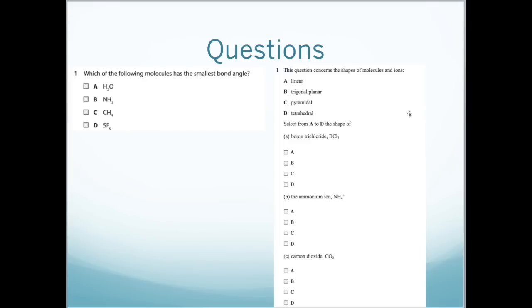For the ammonium ion, because of the four hydrogens and the positive charge, there are four bonding pairs, which means it will have a tetrahedral arrangement, so D. And carbon dioxide, there are two bonding pairs, therefore it will be linear, and it will have a bond angle of 180 degrees.